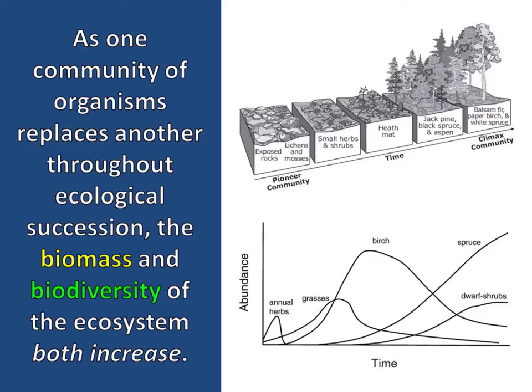As one community of organisms replaces another throughout ecological succession, the biomass and biodiversity of the ecosystem both increase. This means that the amount of matter found in living tissues and the number of different species both go up in an ecosystem as it travels through the stages of succession.